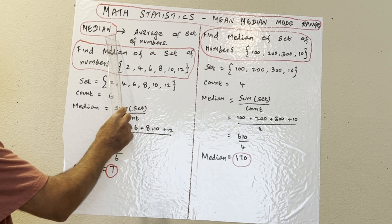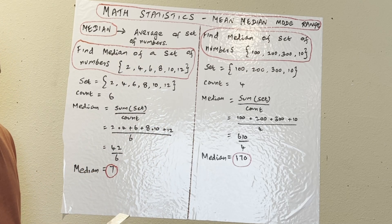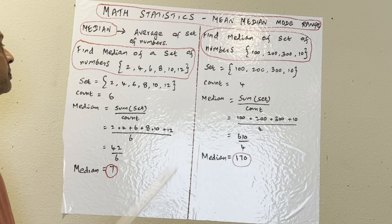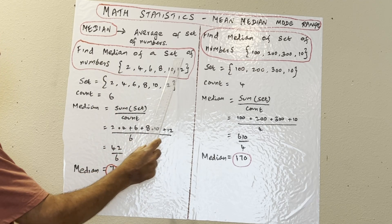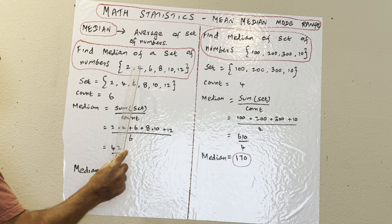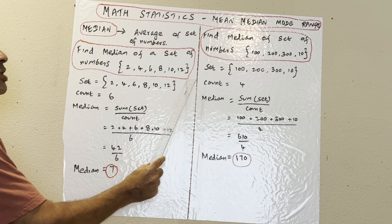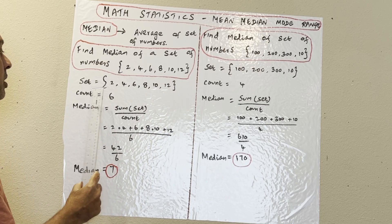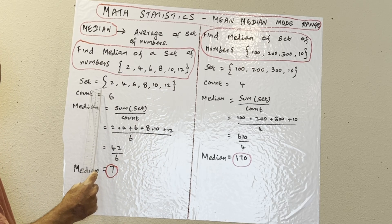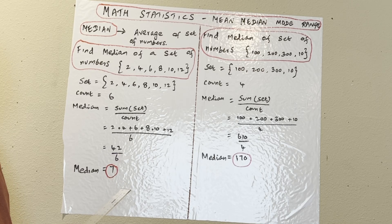Mean is the average of a set of numbers. Find the mean of a set of numbers: 2, 4, 6, 8, 10, 12. So this is the set — we have to find the sum of all the numbers.